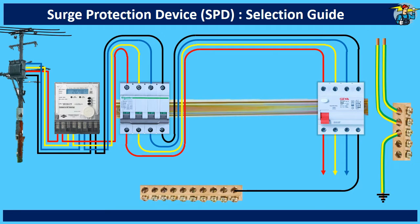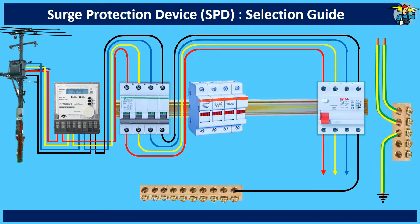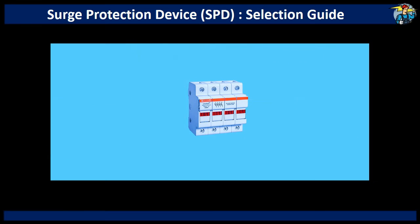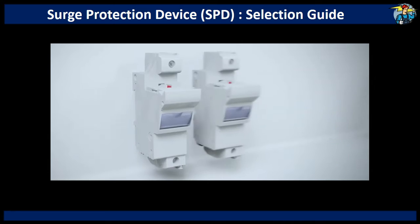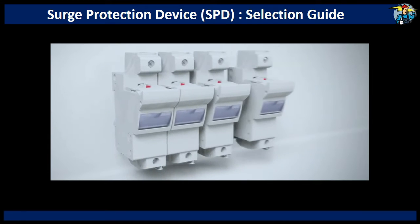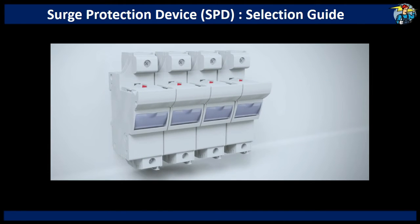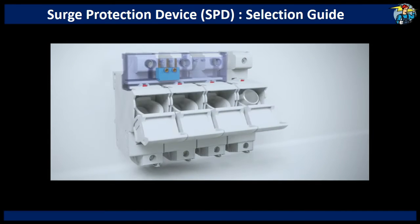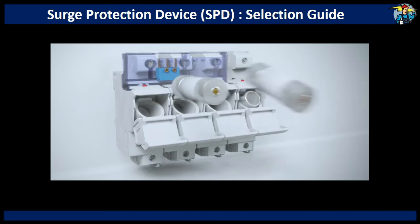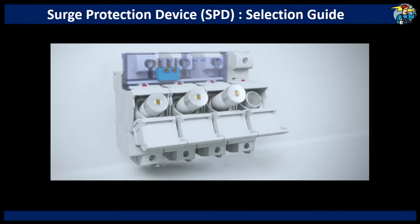Before fixing the SPD, it requires an OCPD — that is an over-current protection device — to be connected in line with the SPD. Typically, this should be a cylindrical fuse holder with the correct rated fuses intact. This is to isolate the SPD in the event of a failure, most likely after a direct lightning strike, and will prevent short circuits of the main lines through its damaged or strained internal parts.